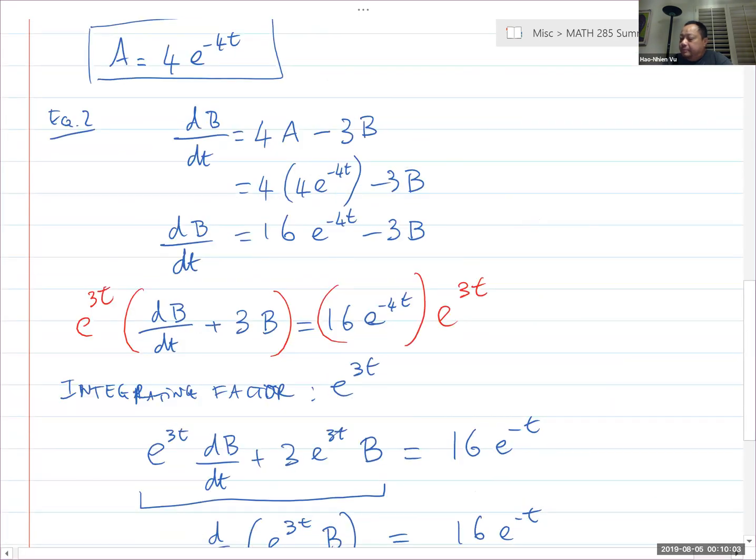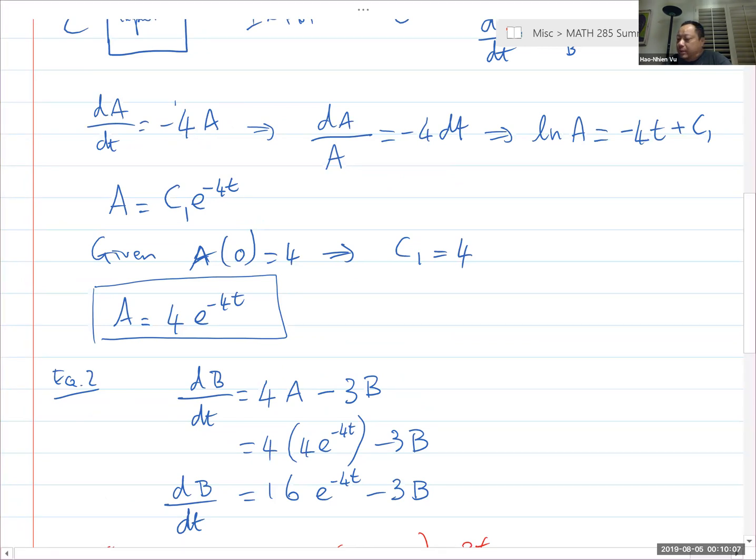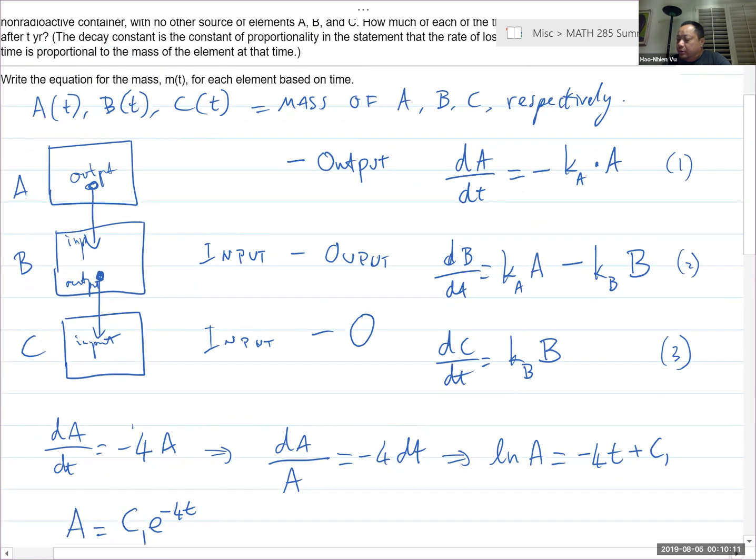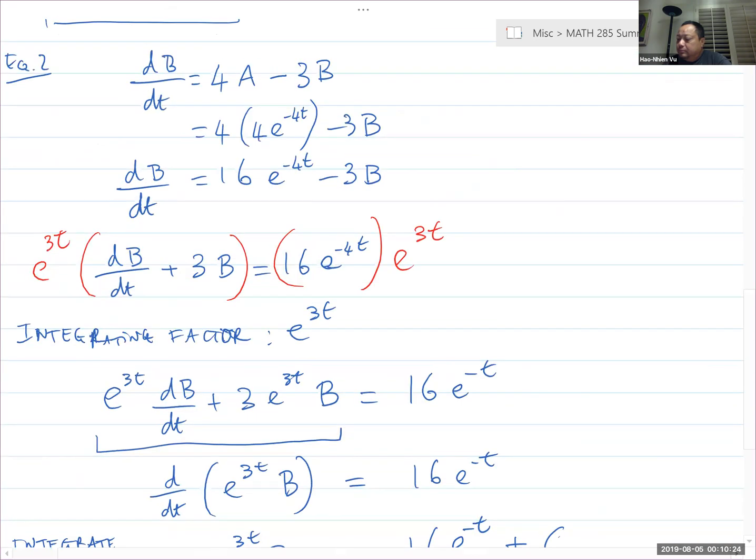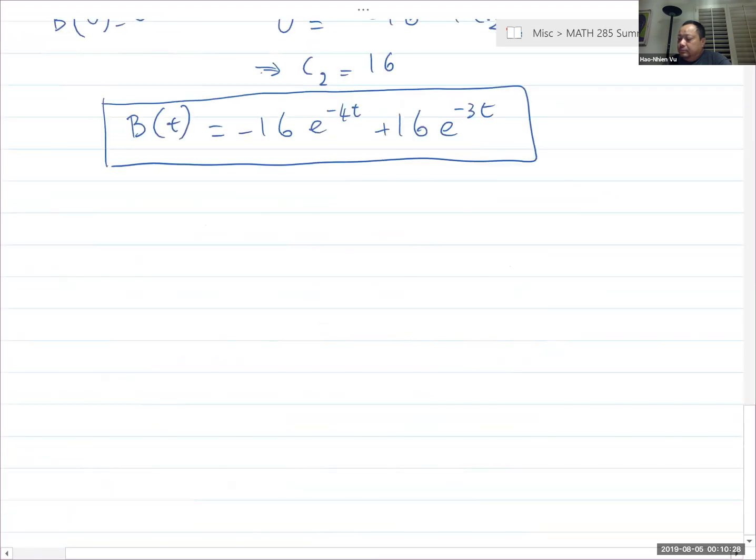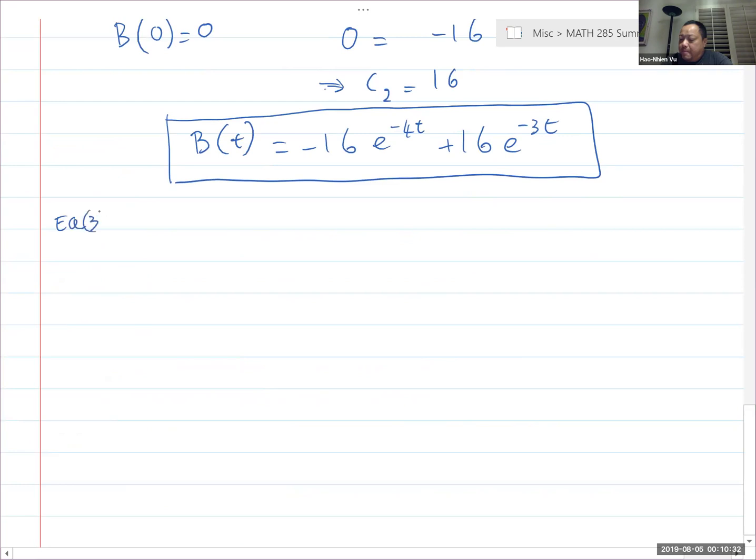All right. So I got my A and I got my B. Now I'm scrolling back and looking for my C equation. Here we go. The equation for C is that it's whatever the output of B, it becomes the input of C. So equation 3, dC/dt is equal to k_b times B. K_B is 3. So dC/dt is equal to 3 times all of this stuff: minus 16e^(-4t) plus 16e^(-3t).